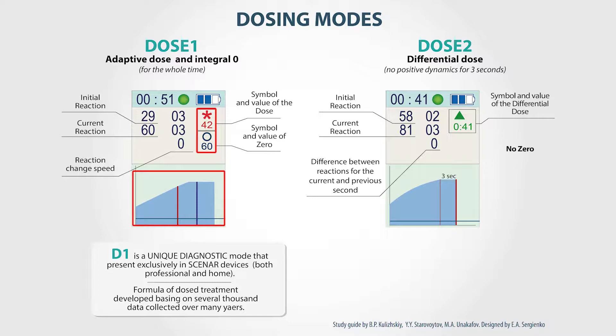If the initial reaction of the new point is higher by 4 or more, we also treat it until the dose. And finally, when we obtain two dose values, we can compare them. Apply the electrode to the place with the bigger dose value, and hold it there until zero.